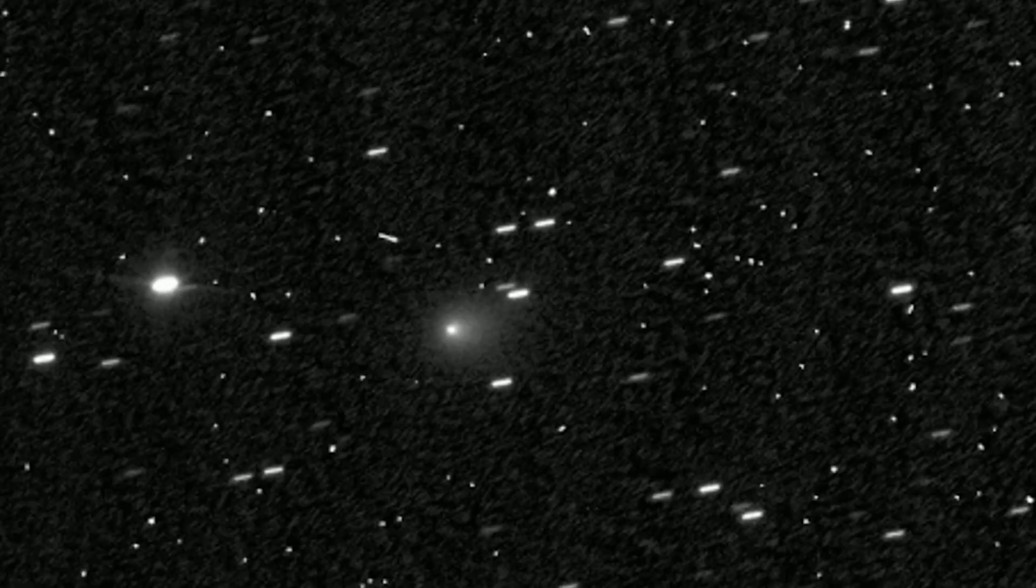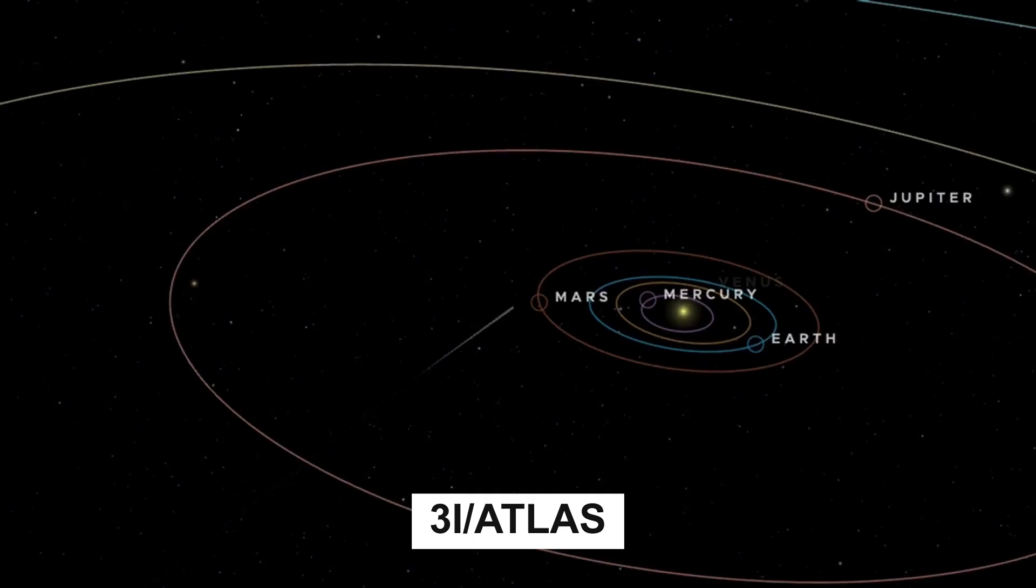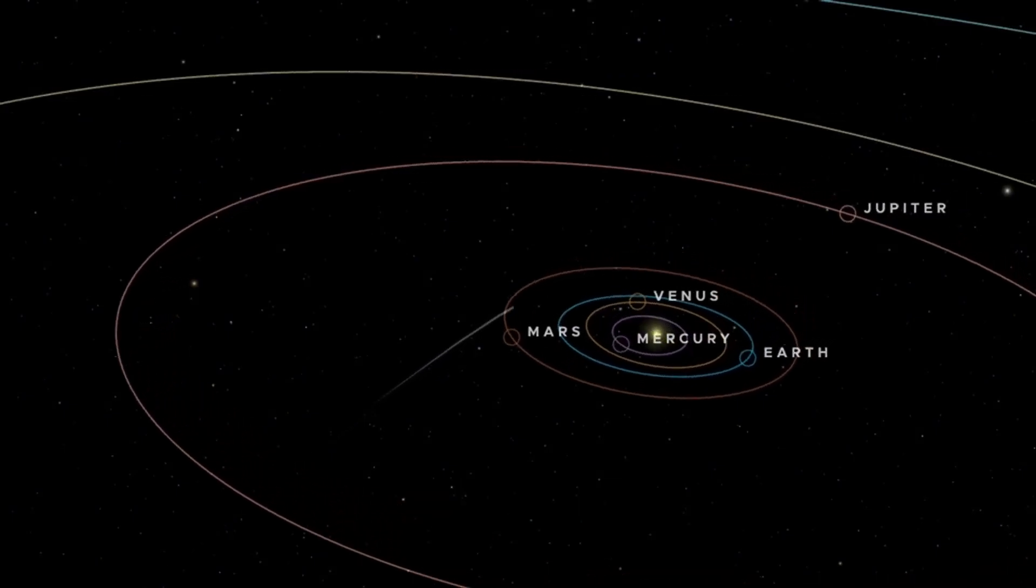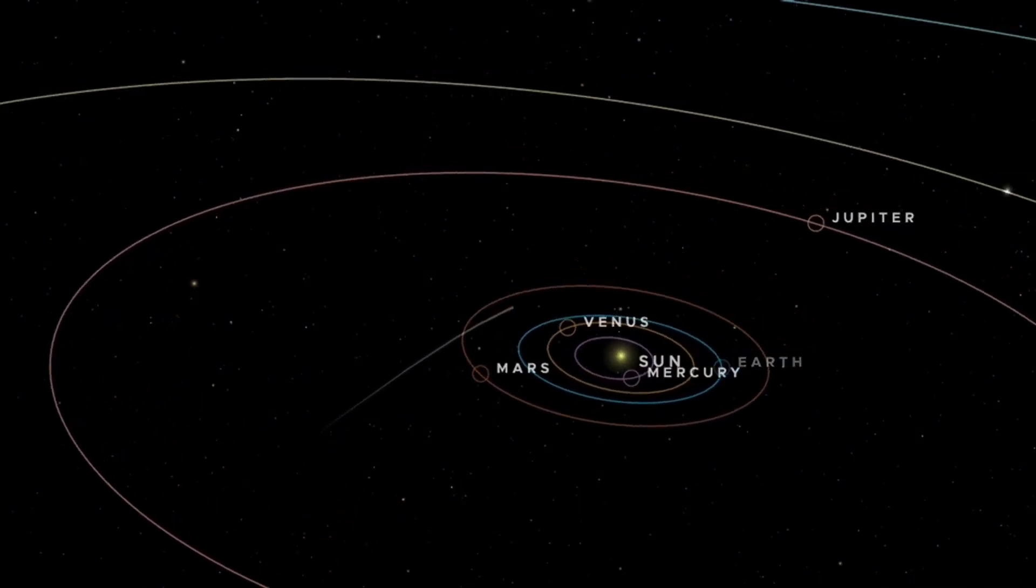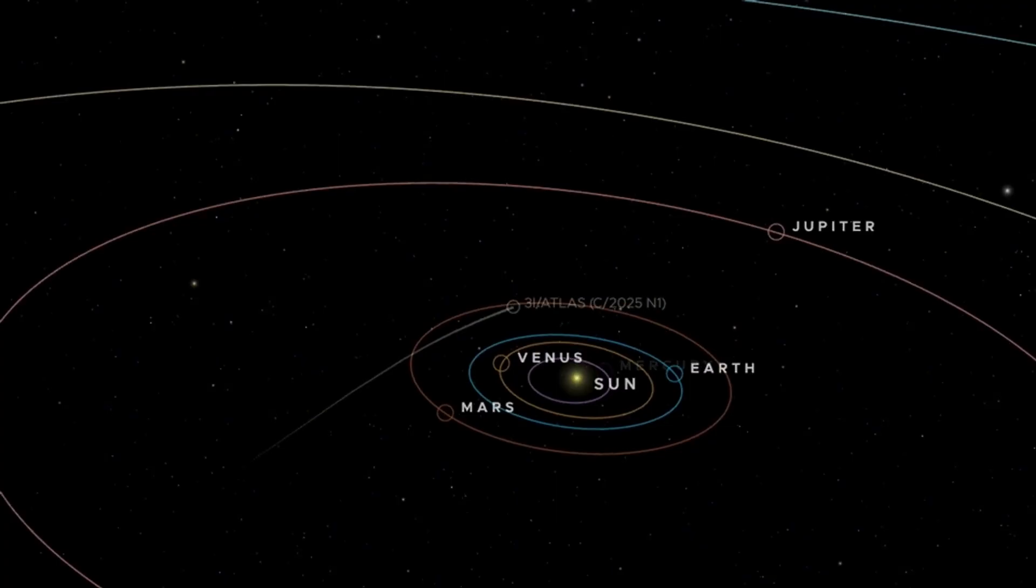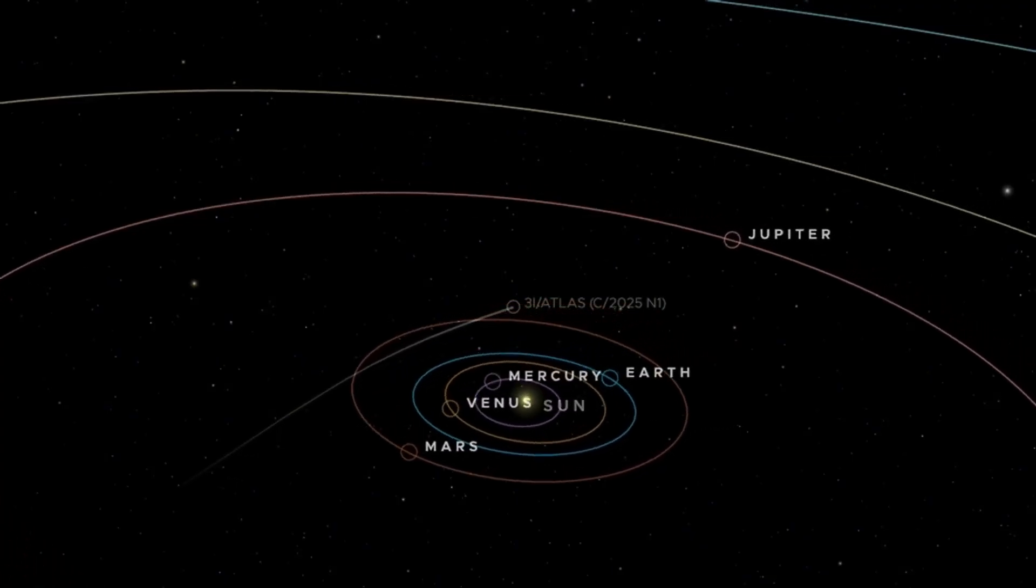Right now, one object dominates the attention of astronomers across the world. 3I/ATLAS, an interstellar visitor from beyond our solar system, is no longer behaving like the faint blur that early models suggested.